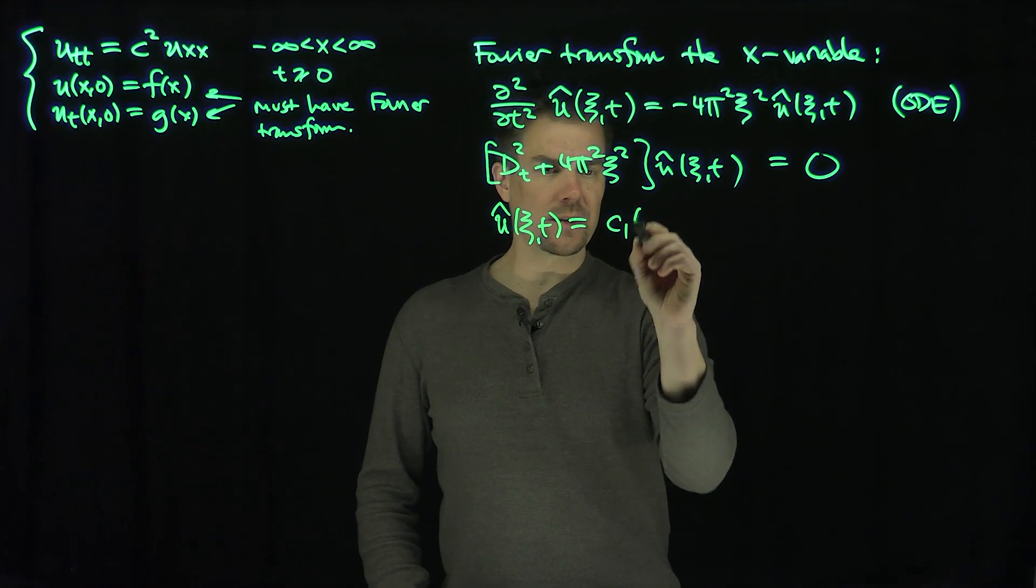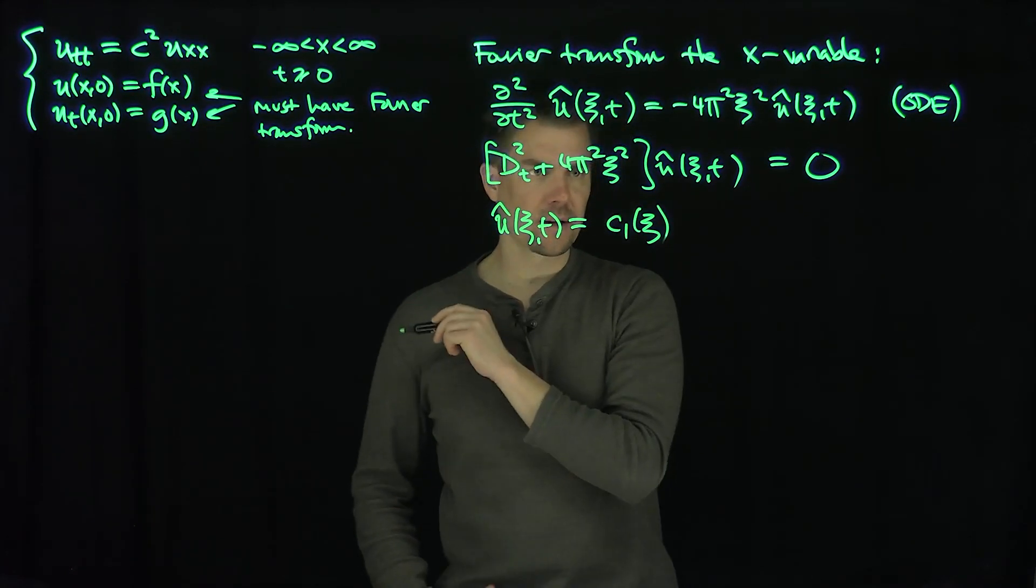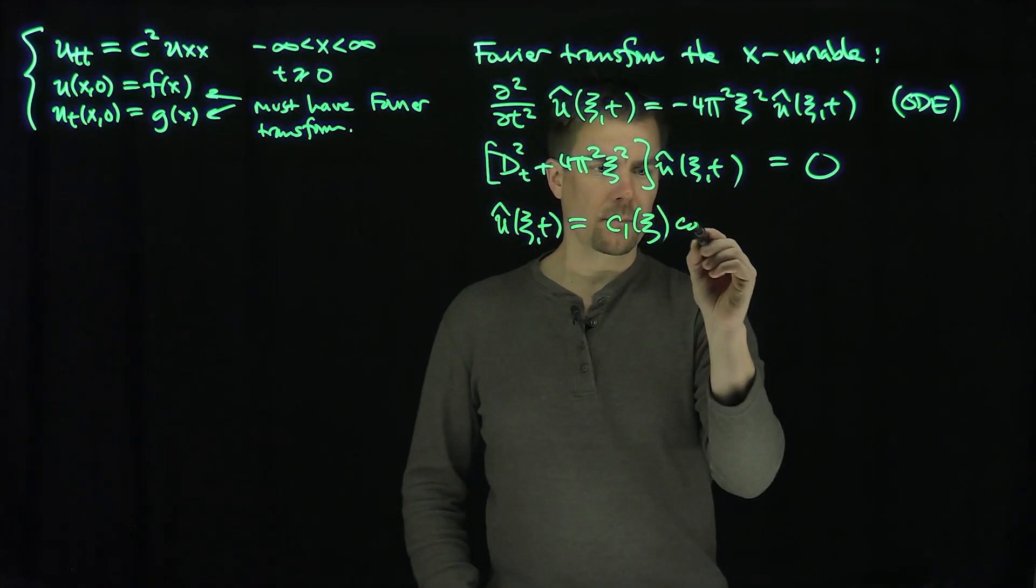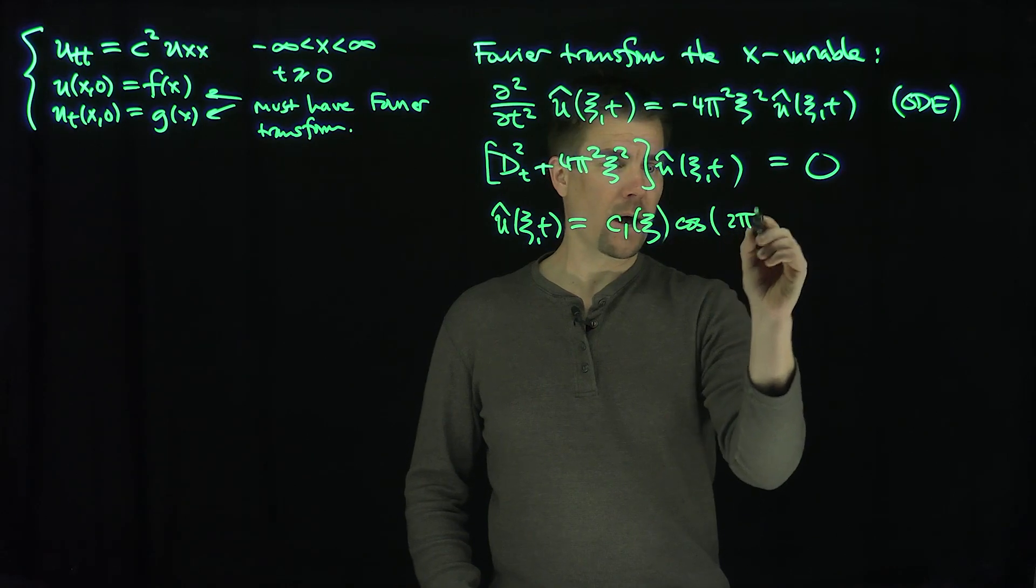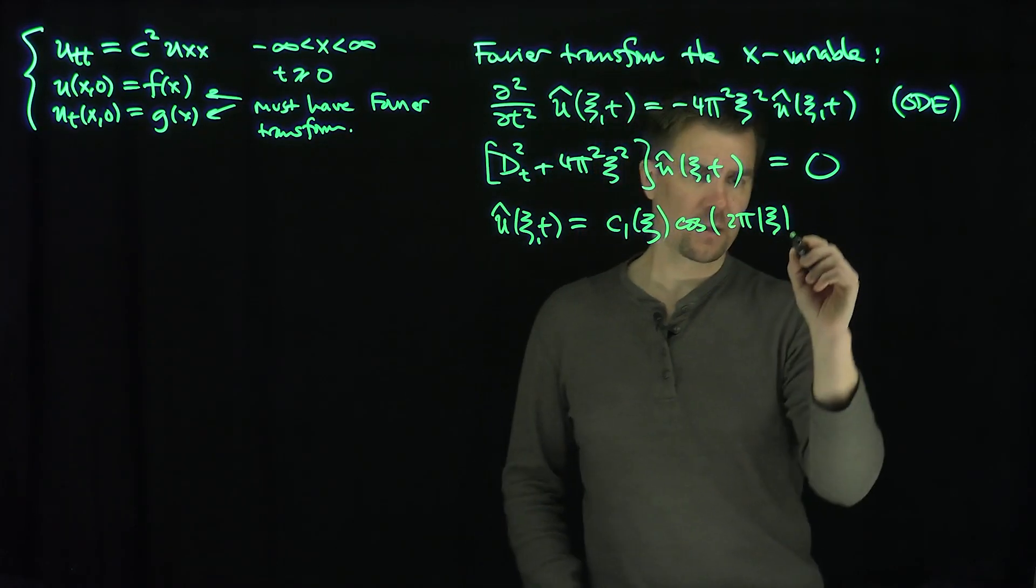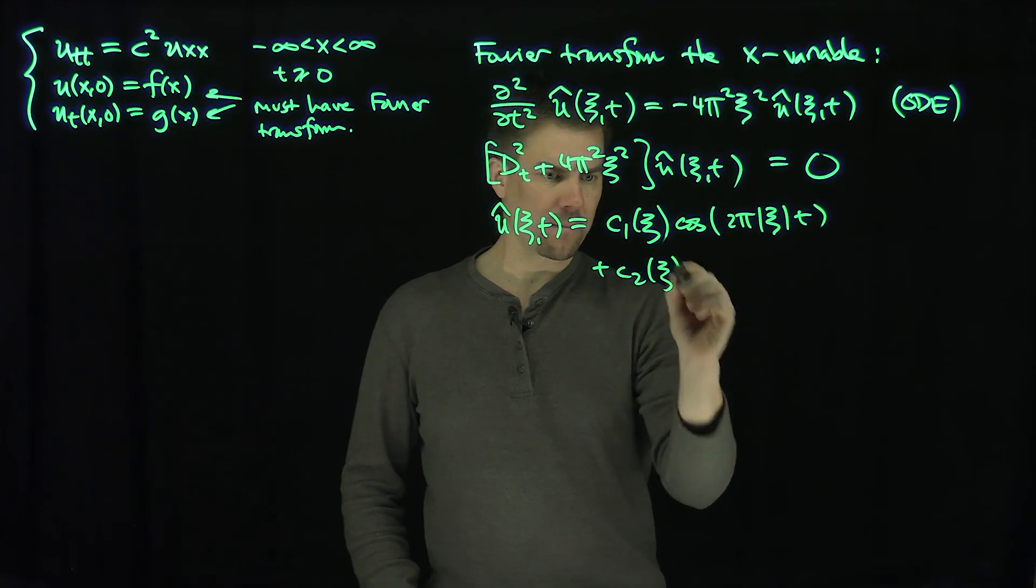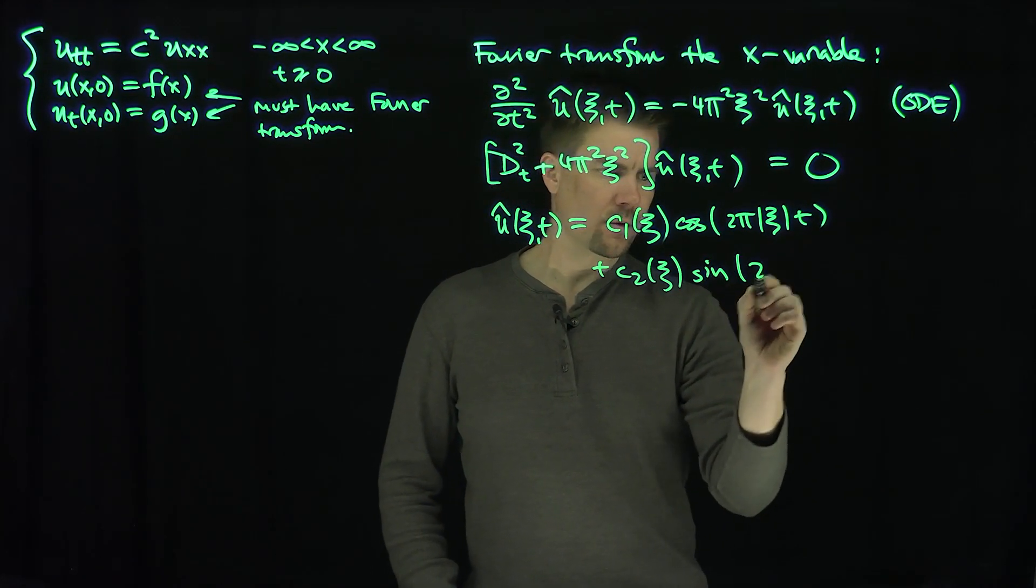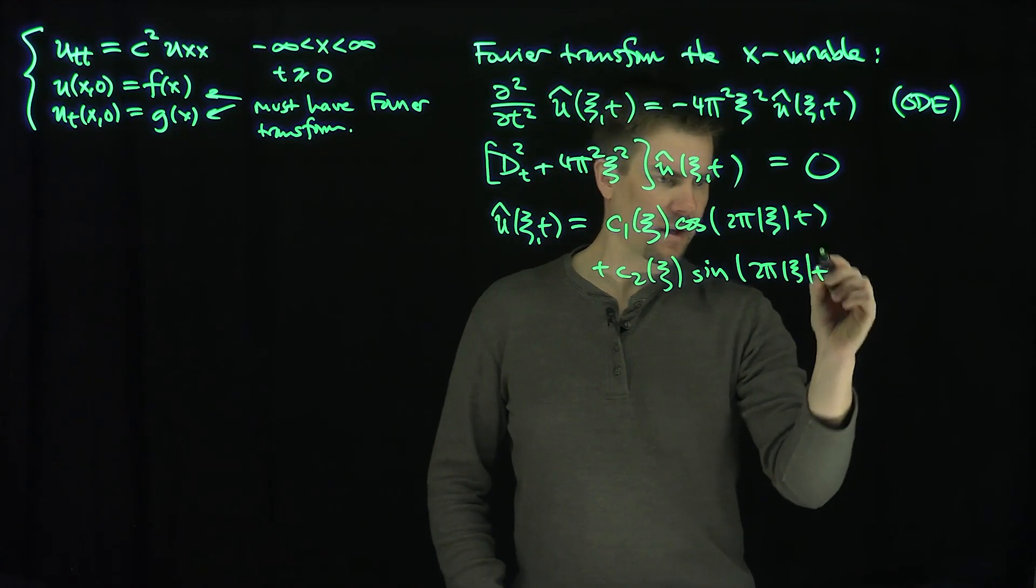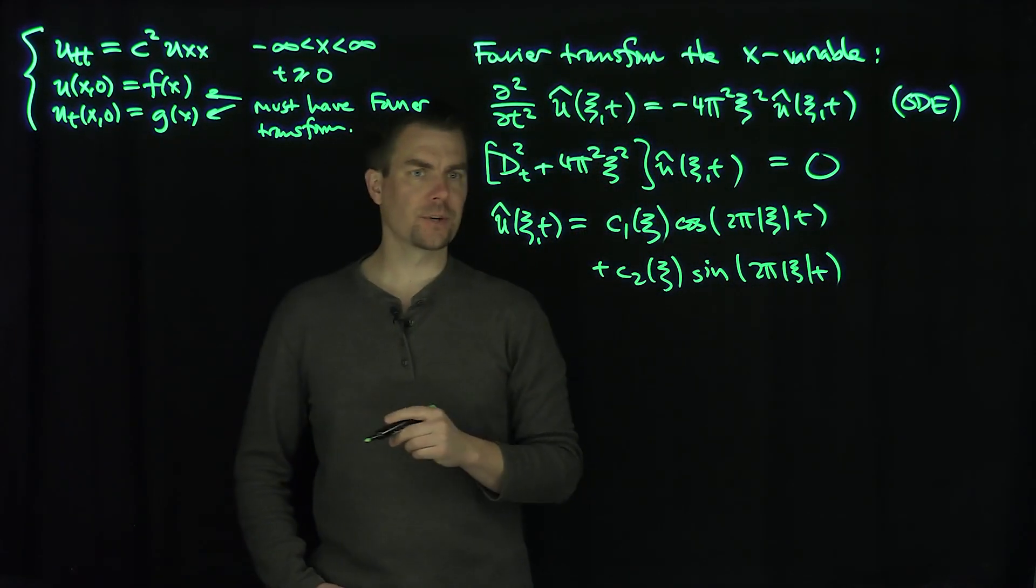It's going to be a constant c1 of xc, because the constant is dependent on xc now, cosine of 2 pi modulus xc of t plus c2 xc sine 2 pi modulus xc t, like that. That's our solution.